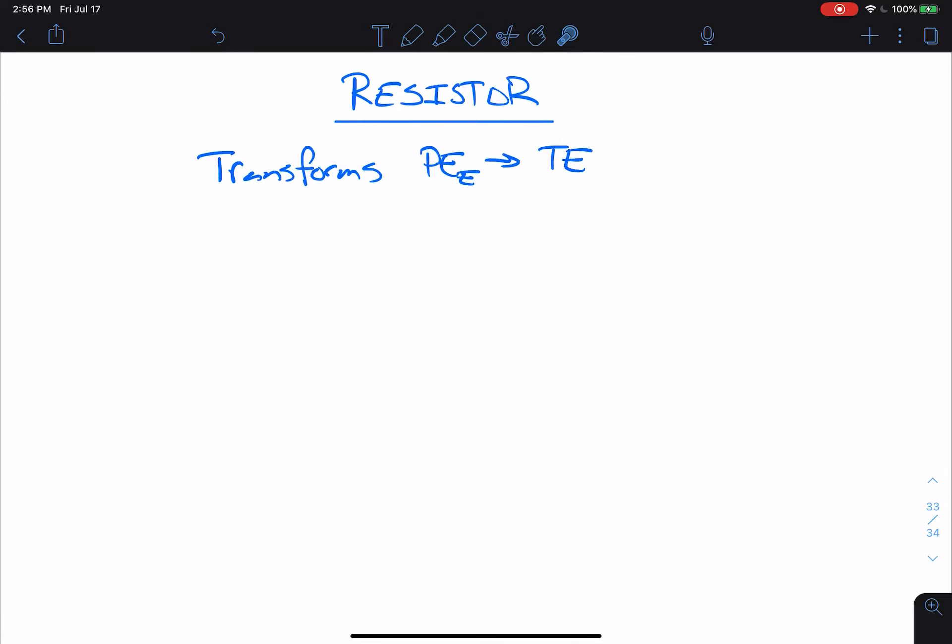Resistors do this by way of a certain property they have, which is known as resistance. We represent resistance with the letter R, capital R.